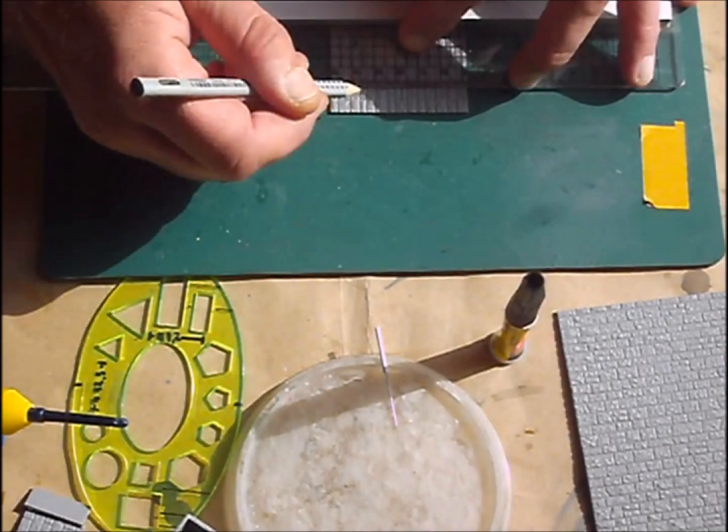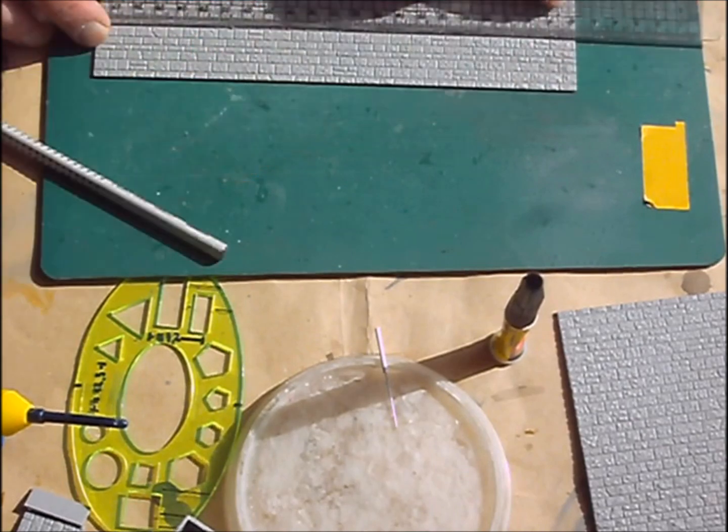For the lower portion of the wall I used styrene sheets with a brick profile. You can get those at model railroad shops. Somehow they match our scale quite often and as long as it looks right don't shy away from using stuff like this.